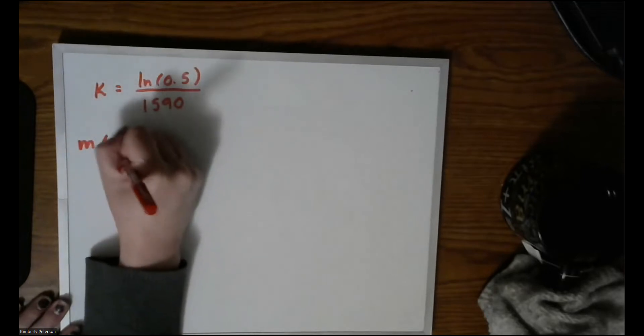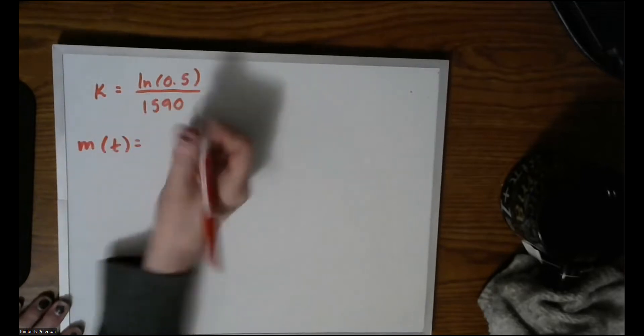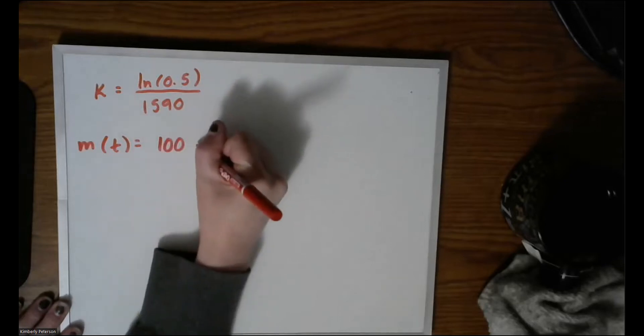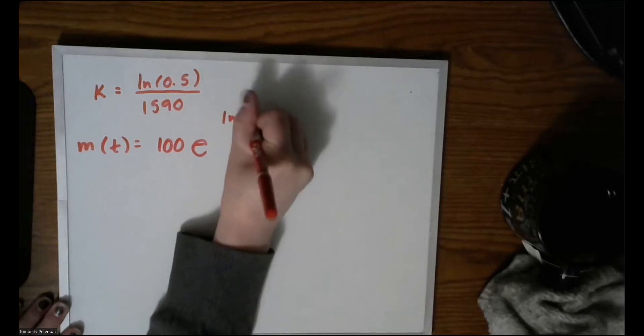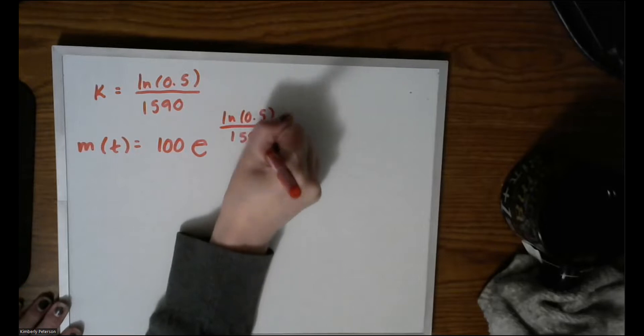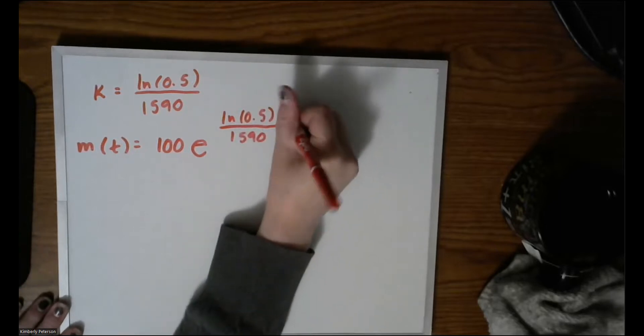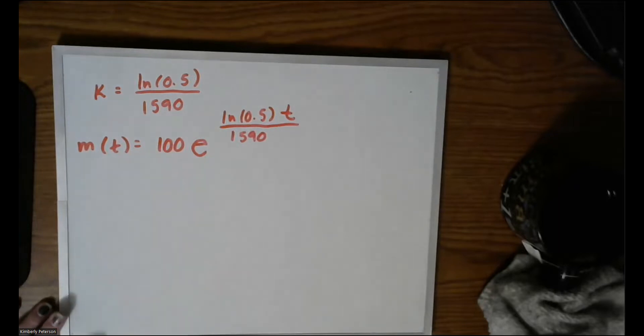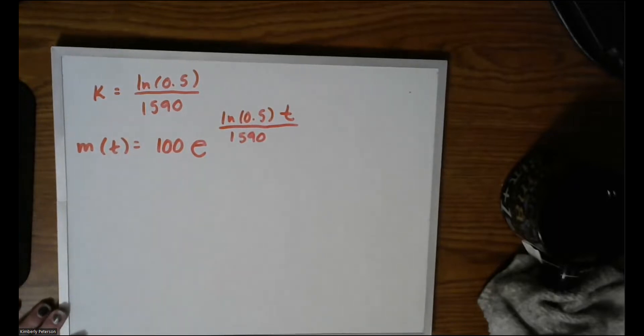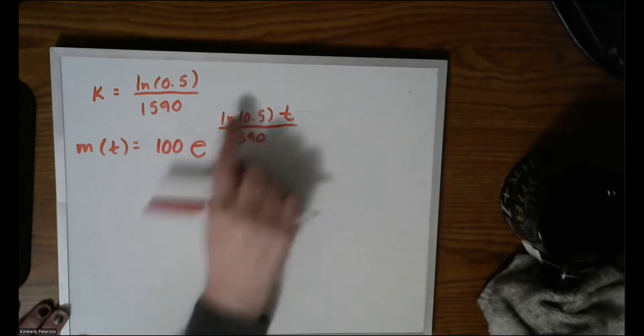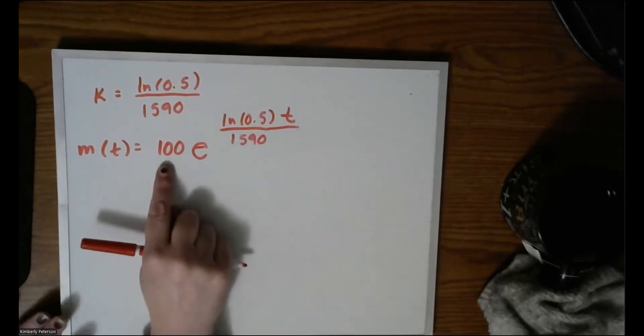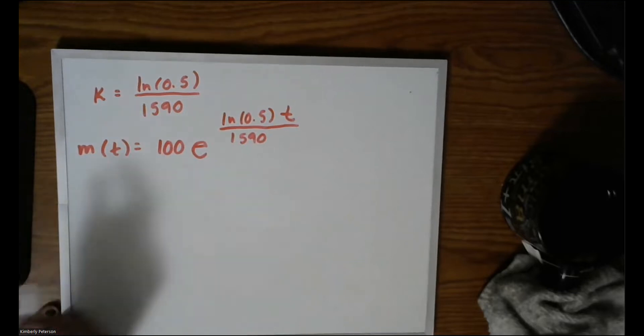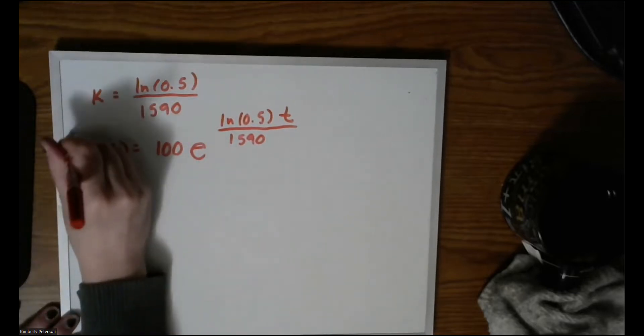So recall when I took the natural log of the right-hand side, they undid each other and the exponent comes down. So from here I will divide both sides by 1590. So I will end up with the following: k = ln(0.5)/1590. Now we can put this all together in our formula. So m(t) equals our original 100 milligrams times e^(kt), so maybe I'll put the t right up here. So now we've found our parameters. We know k, our growth rate, or our decay rate rather. We know our initial mass. So now we have our formula. So that would be part A.